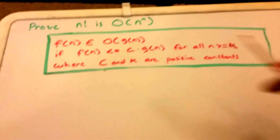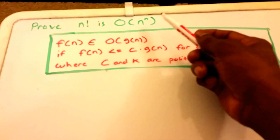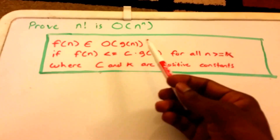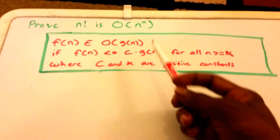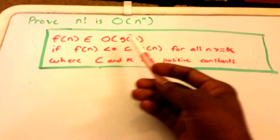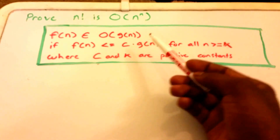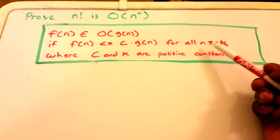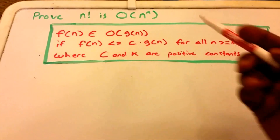Hey guys, in this video I want to prove that n factorial is big O of n to the power of n. Here I have the definition of what it means for a function to be big O of n. It says f of n belongs to big O of g of n if f of n is less than or equal to some constant times g of n for all values of n greater than or equal to k, where c and k are positive constants.